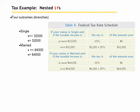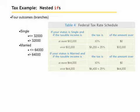then their tax is $3,200 plus 25% of their amount over $32,000. If their status is married and their taxable income is less than or equal to $64,000, then their tax is 10% of the amount over $0 — so 10% on all of their income. If their status is married and their taxable income is greater than $64,000, then their tax is $6,400 plus 25% of the amount over $64,000. So you can see this is going to take several nested if statements.